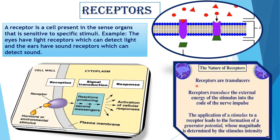The next concept is: what is a Transducer? A Transducer is the structure which transforms one kind of energy into another kind. Receptors are Transducers — they transduce the external energy of the stimulus into the electrical code of the nerve impulse. The application of a stimulus to a receptor leads to the formation of a generator potential whose magnitude is determined by the stimulus intensity.